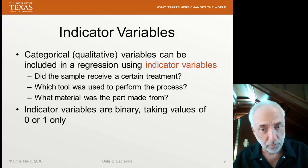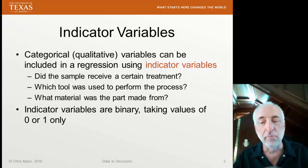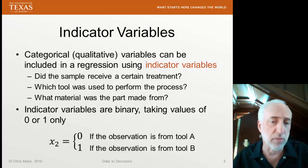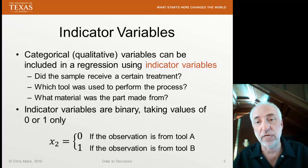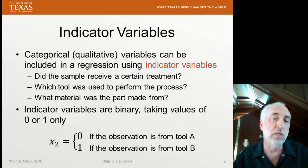Indicator variables are binary. They only take on values of 0 or 1. It could be 0 or 2 or minus 4 and plus 6, but it has to be two separate values, and 0 and 1 makes the interpretation far easier than anything else. For example, X2 might be a regression variable that we're going to use in our model. X2 will have a value of 0 if the observation is from tool A, and a value of 1 if the observation is from tool B.